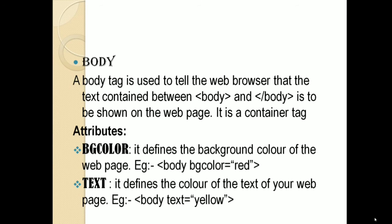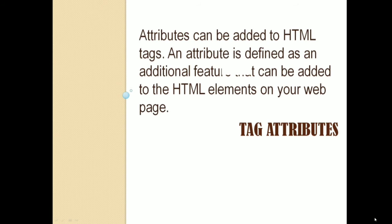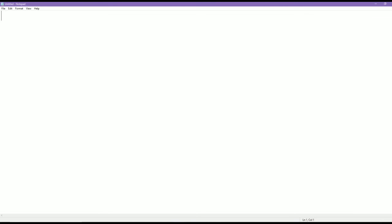Before discussing the body attributes we should know what an attribute is. Tag attributes can be added to an HTML tag. An attribute is defined as an additional feature that can be added to HTML elements on the web page. We can give extra or additional features to the HTML tag to make our web page more attractive — such as background colors, foreground colors, images, and text alignment. All these additional features can be added using tag attributes.